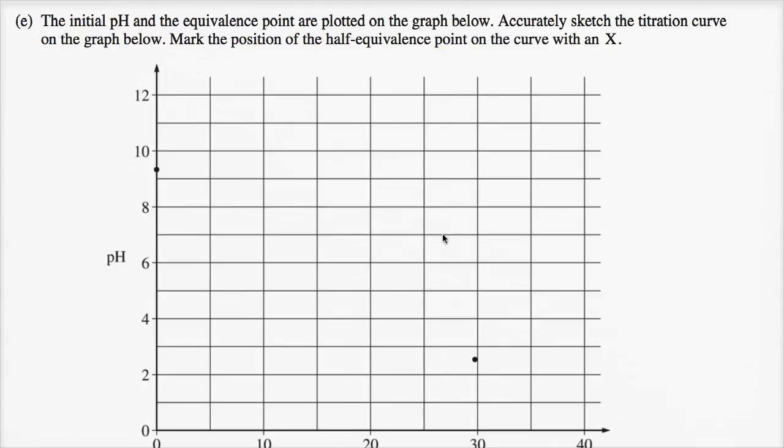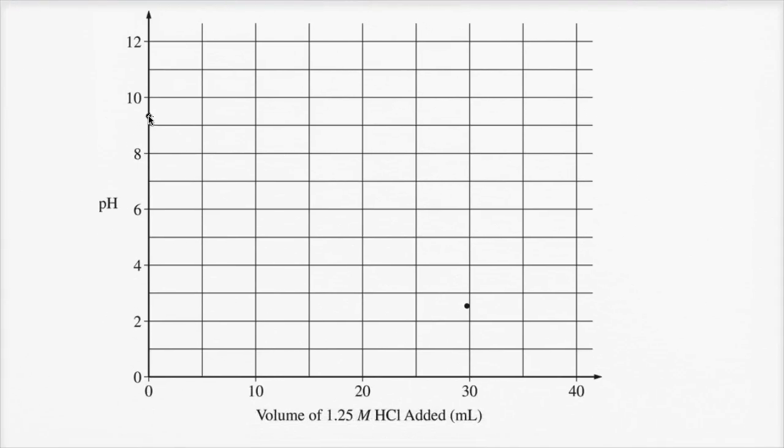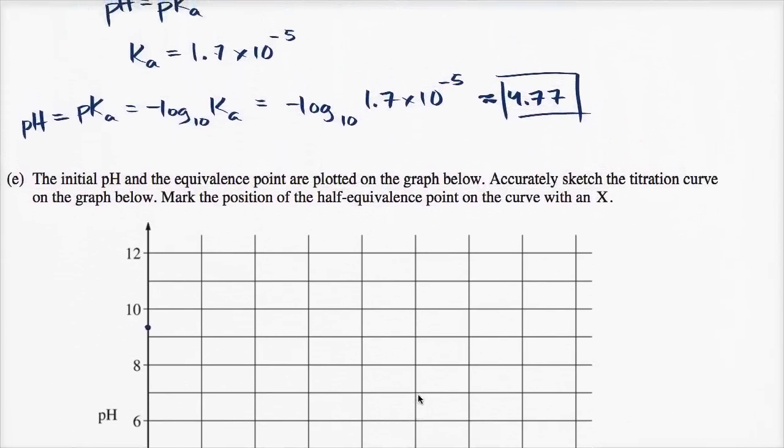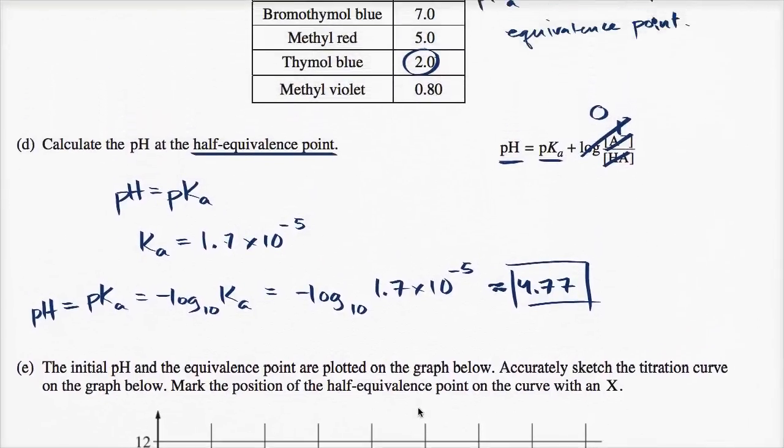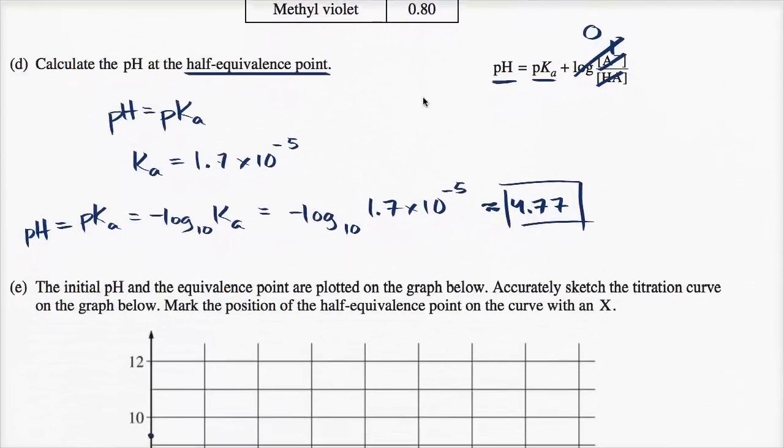Alright, so we have the initial pH shown right over here, and they also show us the equivalence point right over here. We saw in the last problem that the pH at the equivalence point was measured to be 2.54.